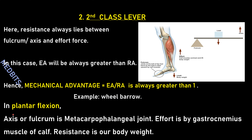The human example of a second class lever is plantar flexion. The axis or fulcrum is the metatarsophalangeal joint, the effort is provided by the gastrocnemius muscle of the calf, and the resistance is our body weight.